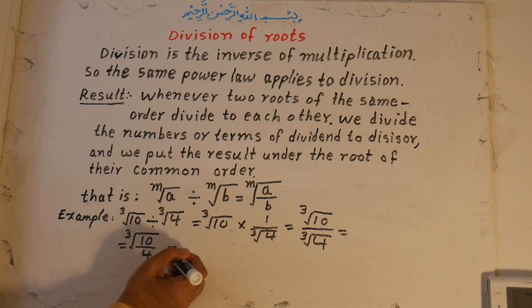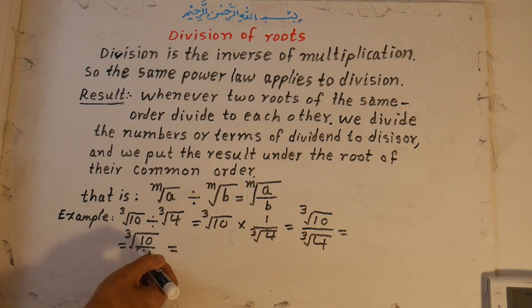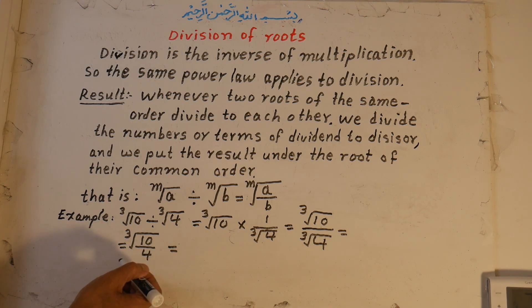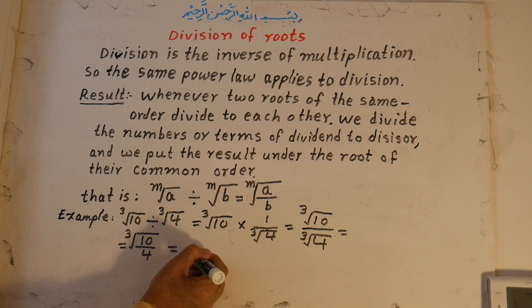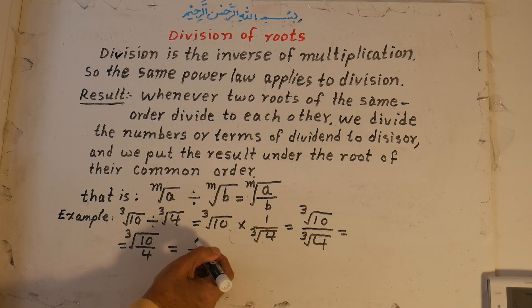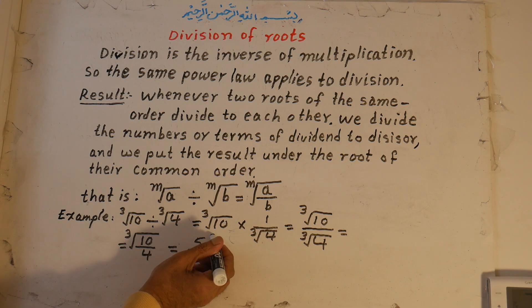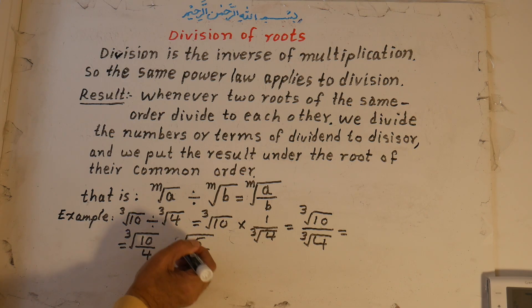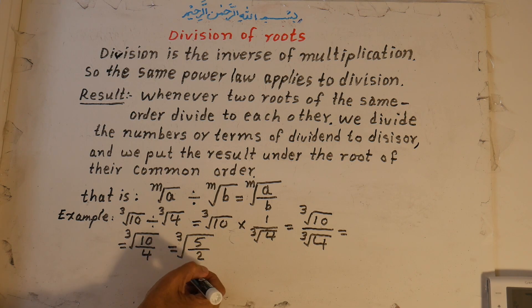We simplify 10 over 4 — it is divisible by 2: 5 times 2 is 10, and 2 times 2 is 4 — giving 5 over 2 under the root of 3. This is the result.